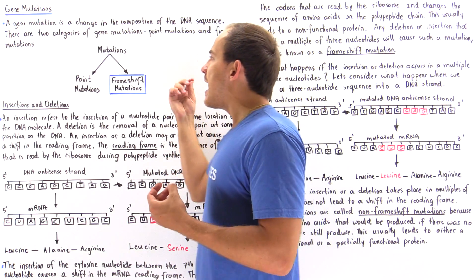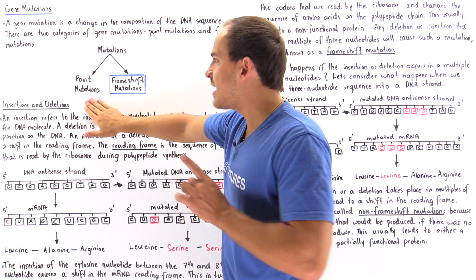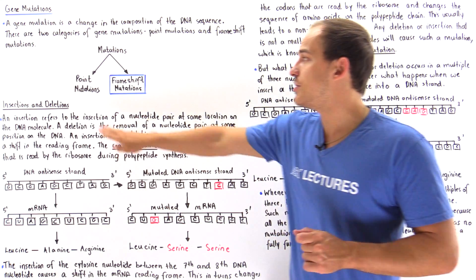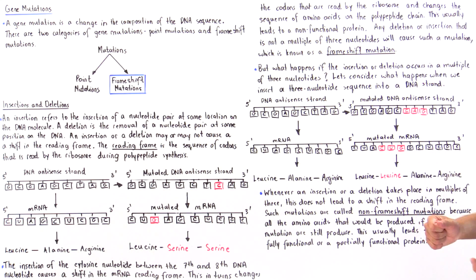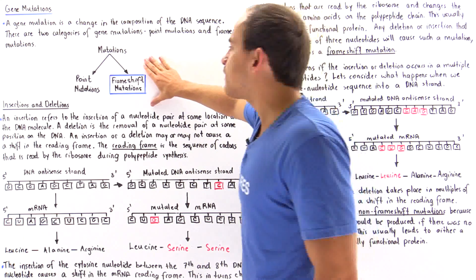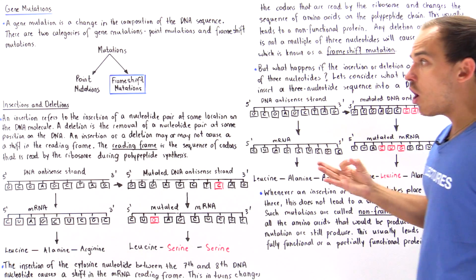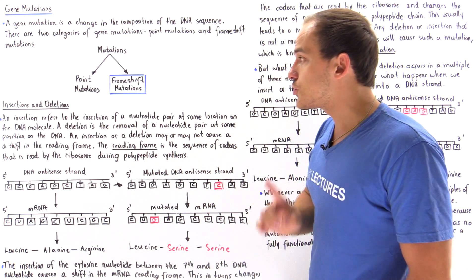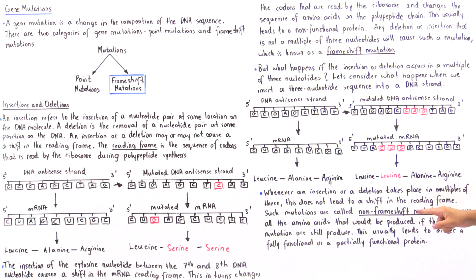To conclude, we have two main types of mutations: point mutations, which are mutations on a single nucleotide also known as base pair substitutions, and frameshift mutations caused by insertions or deletions. Even though insertions and deletions can cause frameshift mutations, they can also cause non-frameshift mutations when the insertion or deletion is a multiple of three nucleotides.